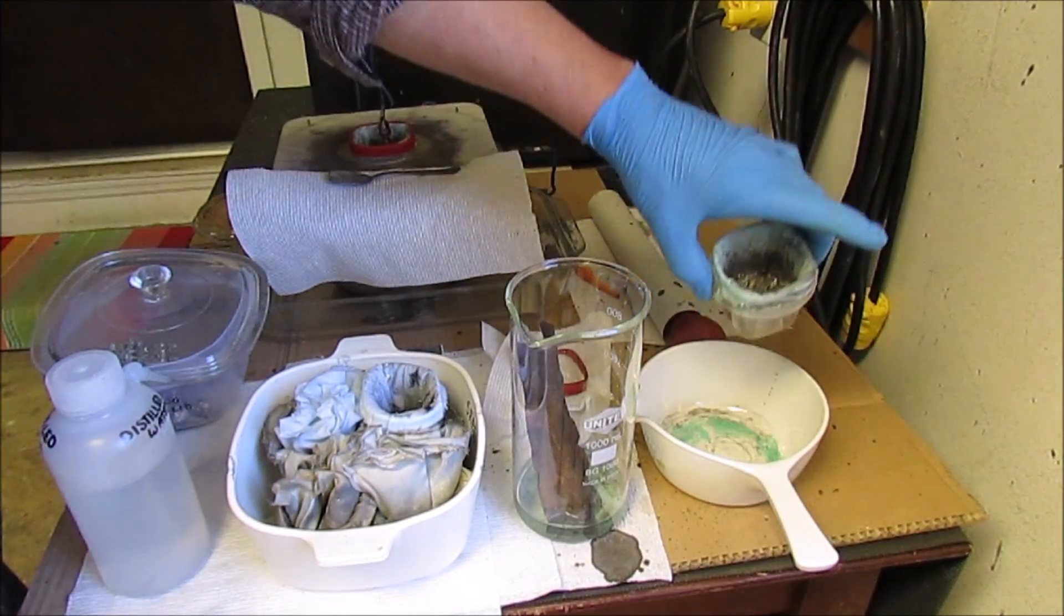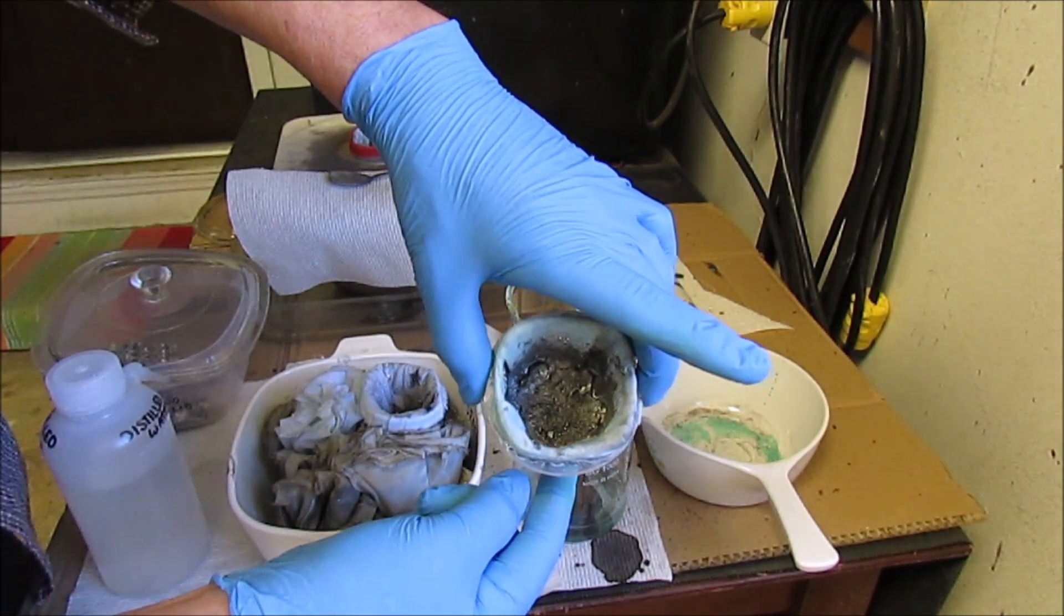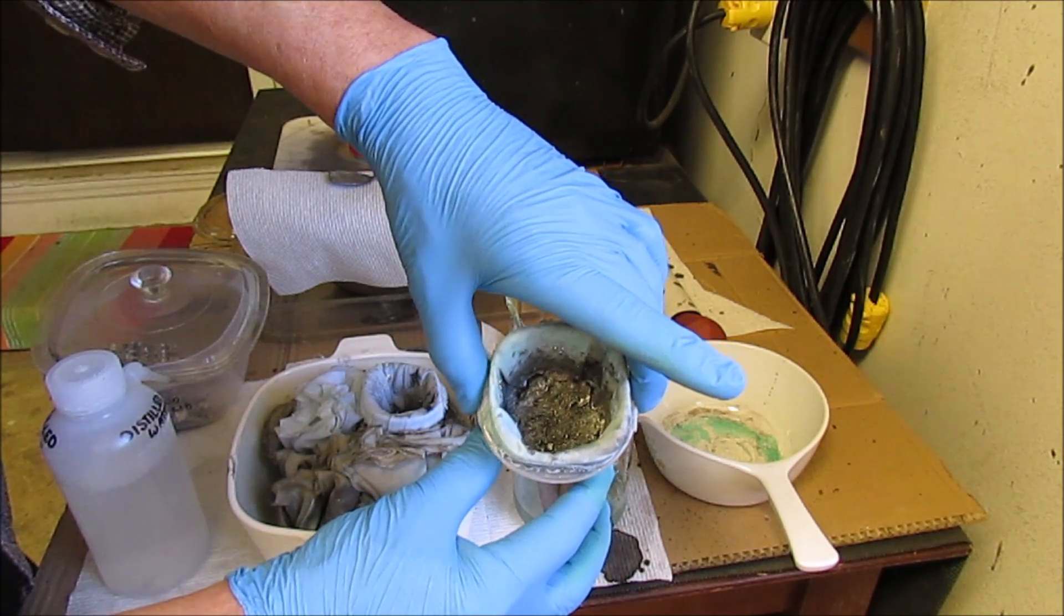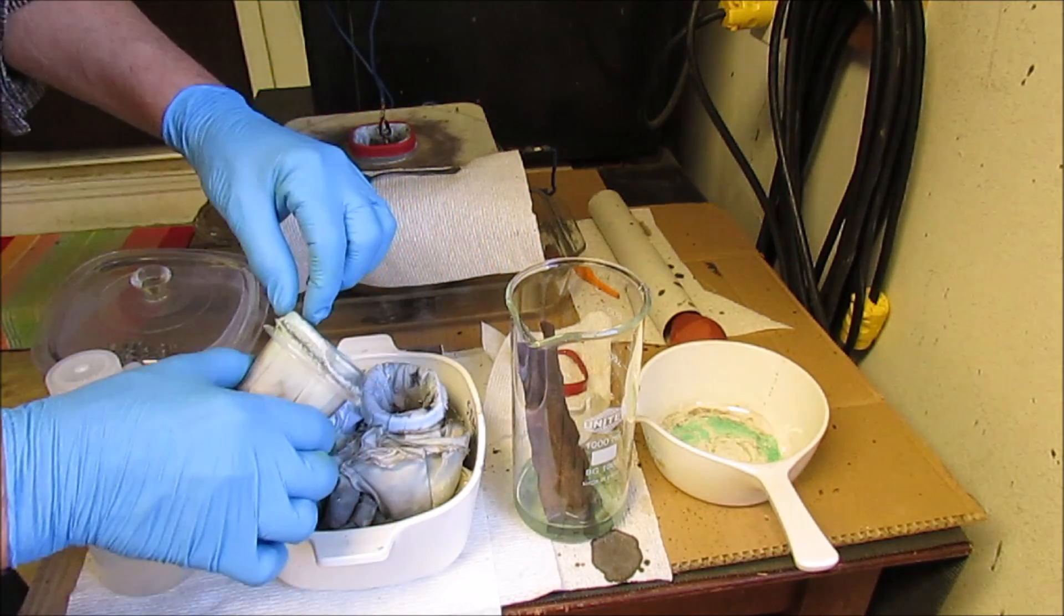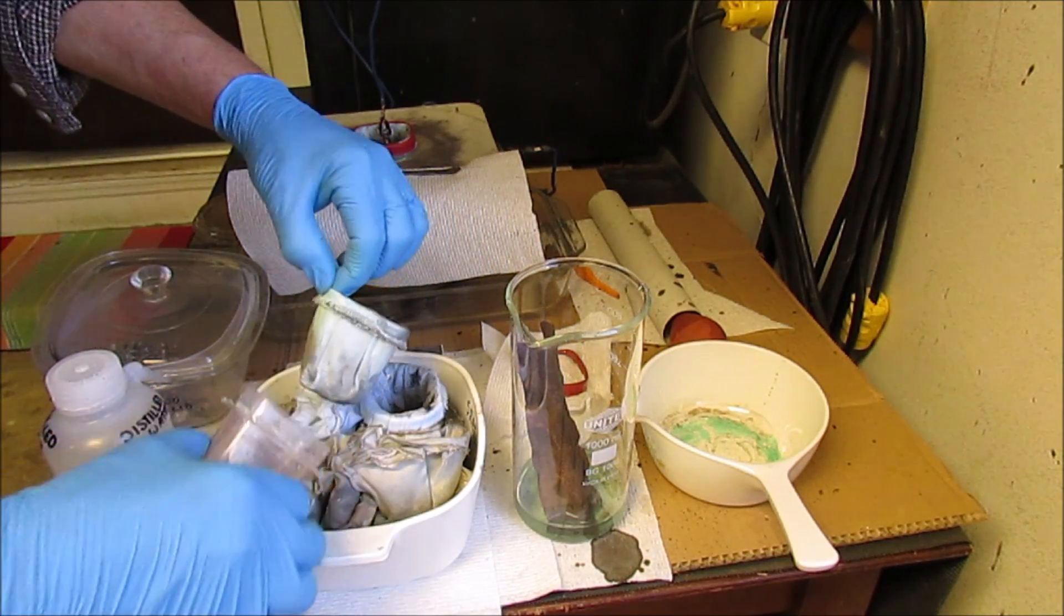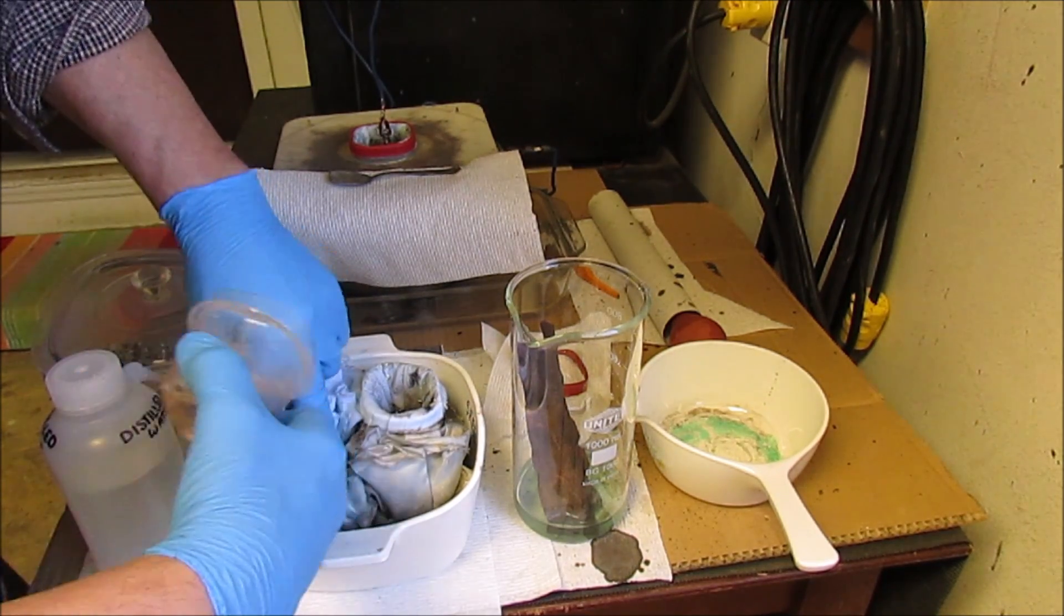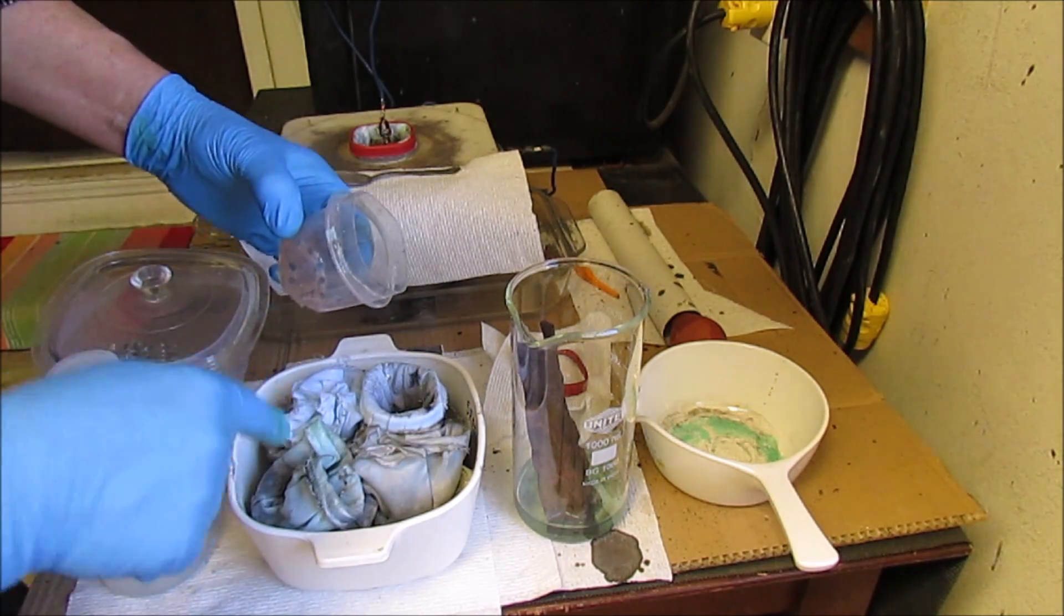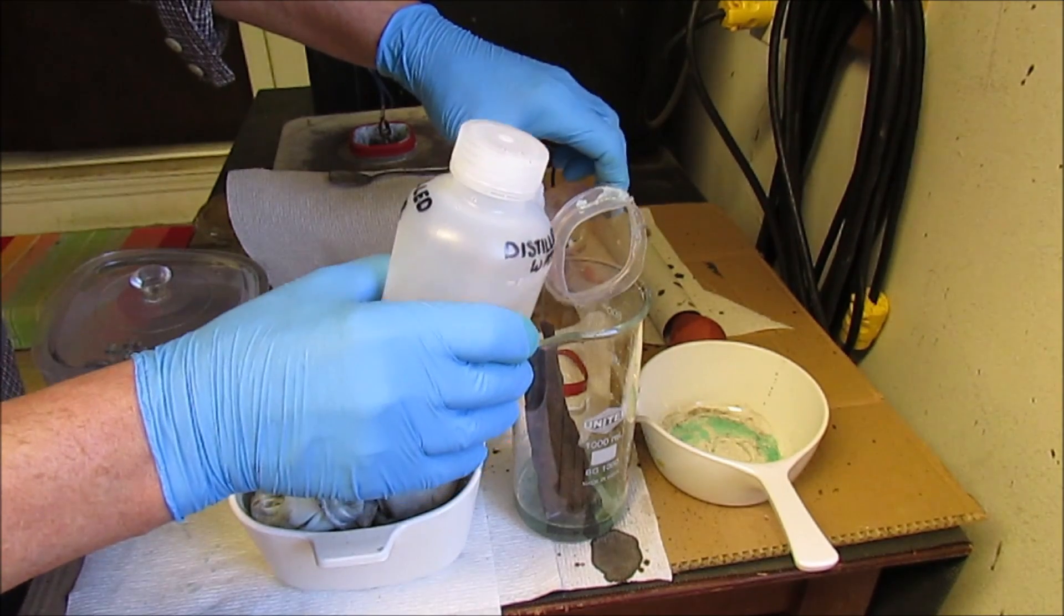This filter from my last batch of silver, the silver slimes there will contain precious metals, gold and platinum group metals, so I save these filters in this container. What I'll do is I've already got one video made of the process but I'll process these filters and recover the precious metals.